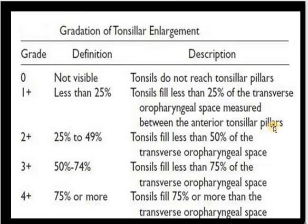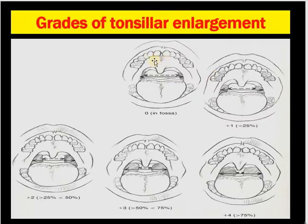How do you grade enlarged tonsils? Grading is important because children commonly have grade 2–3 tonsils without infection and may present with snoring or sleep apnea. Grade 0: tonsils not visible, within the pillars. Grade 1: less than 25% of the transverse oropharyngeal space occupied. Grade 2: 25–49% (tonsils fill less than 50% of the space). Grade 3: 50–74% (tonsils fill less than 75%). Grade 4: 75% or more. You can see the grades of tonsillar enlargement in the picture.